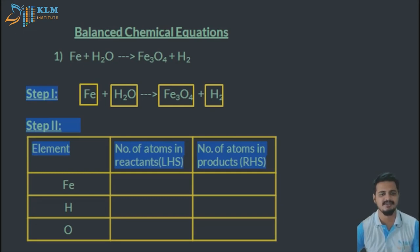This is an example of an unbalanced chemical equation. Here you can see Fe plus H2O is given in the reactant side. In the product side, iron oxide, that is Fe3O4, plus H2 is given.